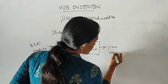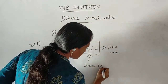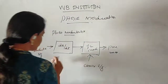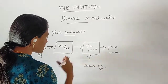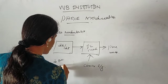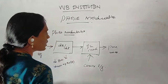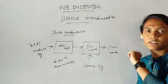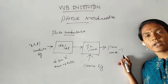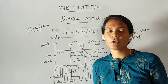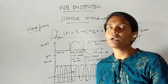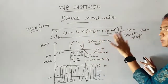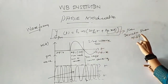This gives us the PM wave output. The carrier signal is also input into the block. The output equation of phase modulation is: y_pm(t) = Ec·cos(2πfc·t + kp·x(t)), where kp·x(t) represents the phase deviation.